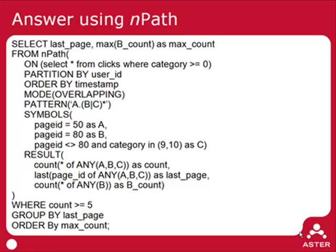Every time we match something of this pattern, we compute a set of aggregates about the matched sequence. In this case, there are three. The first is the count — the total length of the path — how many times any of A, B, or C appeared in the matched path. Whereas in the previous example the path was always length four, here the path can be basically any length: one, two, three, and so on. So the first thing we want to know is how many elements were in the matched path.